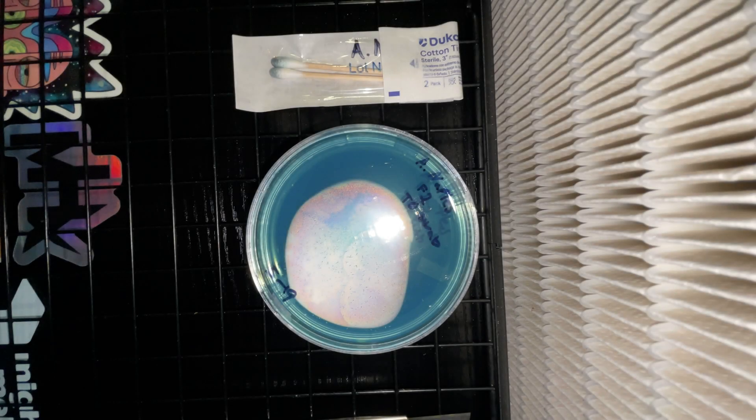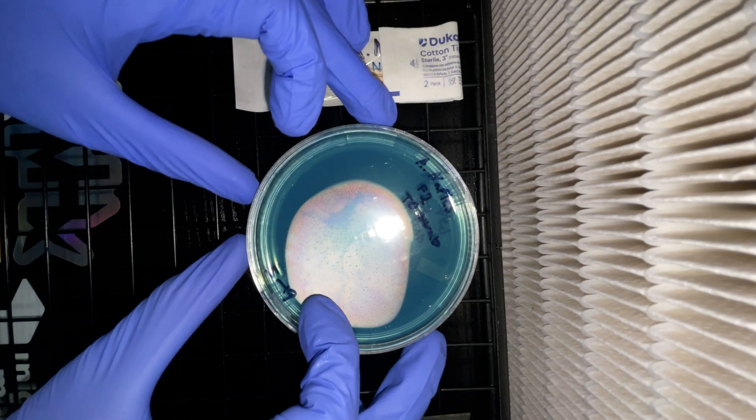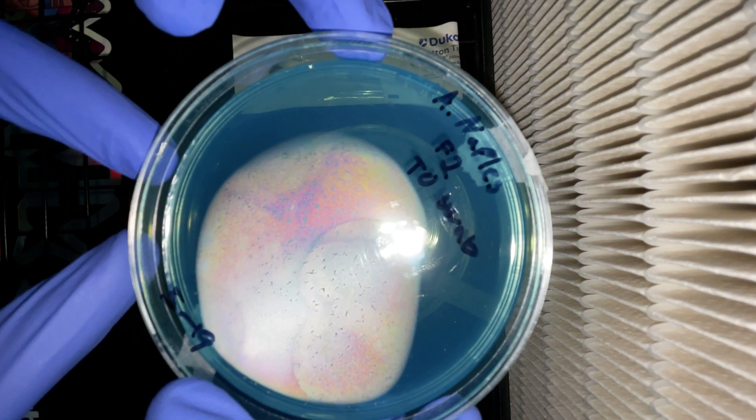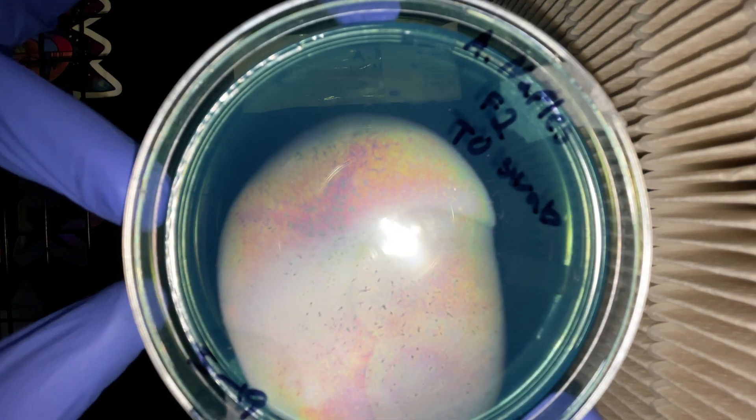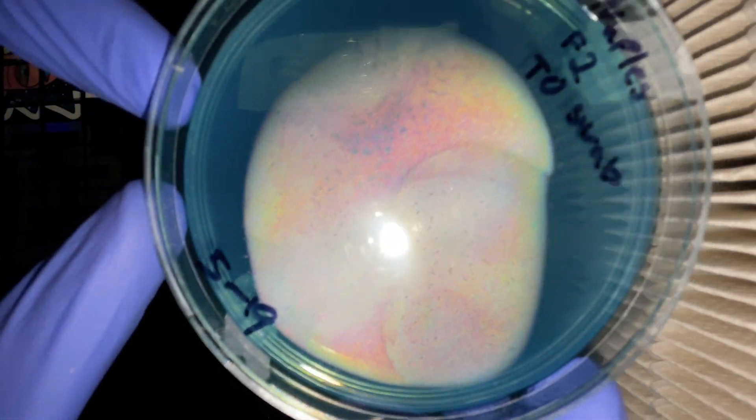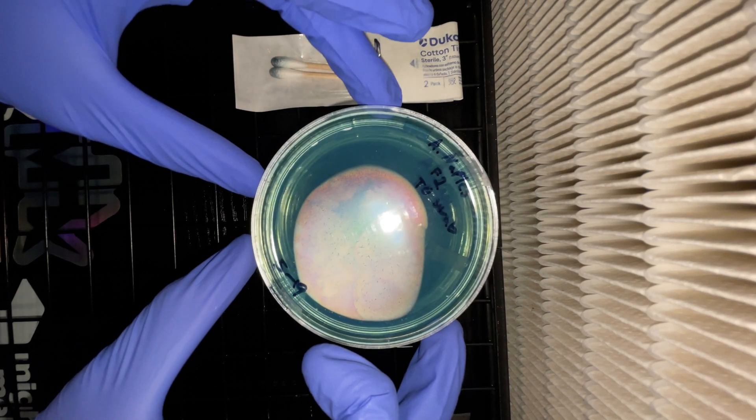This is what it should look like once you're done. Make sure to label your plates how you want them, along with tape them on the edges. I use a cheap micropore tape. Other people use parafilm. Whichever works for you, works for you.